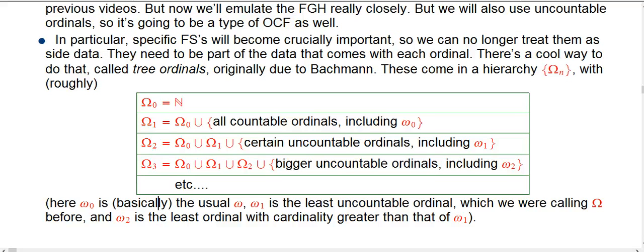So here I explain: Omega naught is basically just mutual Omega. Omega_1 is the least uncountable ordinal. That is something we were calling big Omega before. Sorry for the notational shift, but I wanted to agree with the article. And then little omega_2 is the least ordinal with cardinality greater than that of Omega_1.